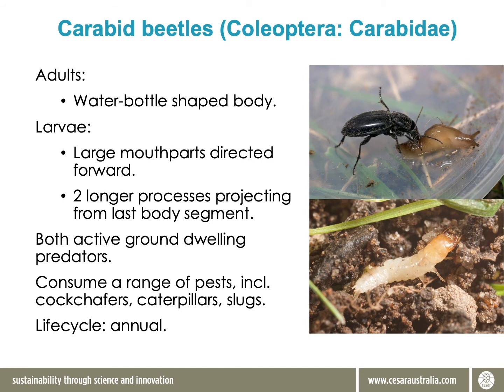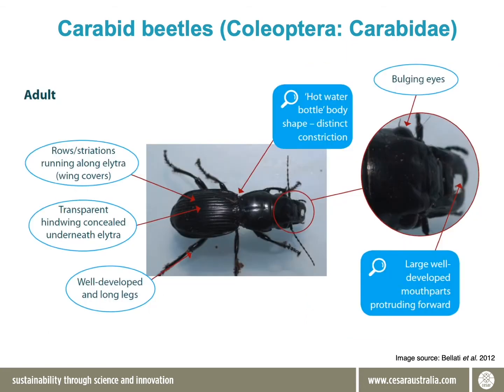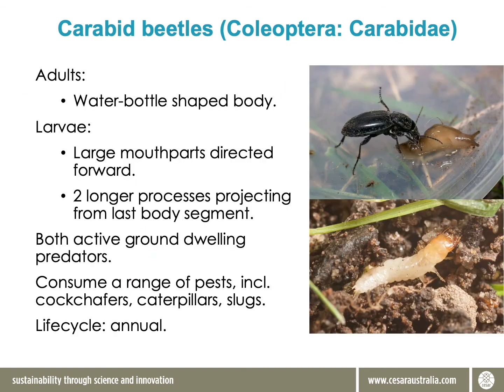This is a photo of a carabid eating a slug. The major way to differentiate these beetles from cockchafer adults or dung beetle adults, apart from differences in behaviour, is that they have a hot-water-bottle shape with a slight constriction in the middle of the body, and their bodies are quite elongated. Carabid larvae look very different — this species is from the Coleoptera group, the same as the scarabs, and they undergo metamorphosis in the same way as a scarab.